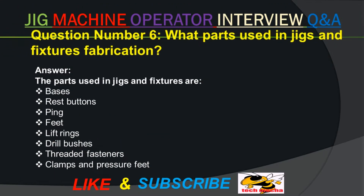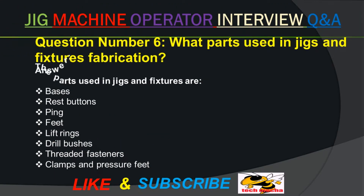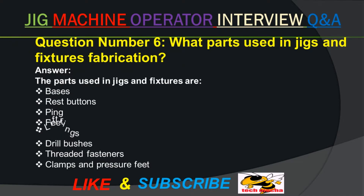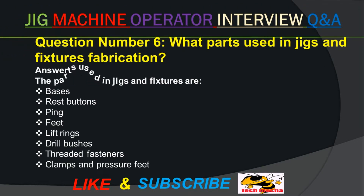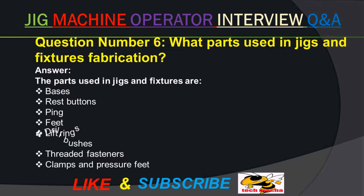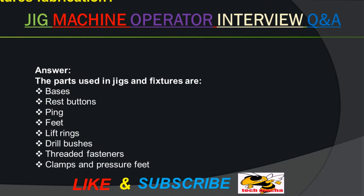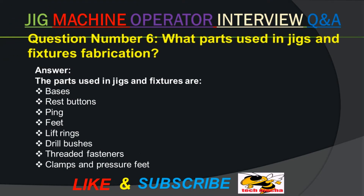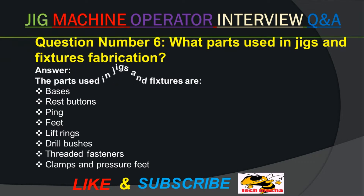Question number six. What parts are used in jigs and fixtures fabrication? Answer. The parts used in jigs and fixtures are: bases, rest buttons, pins, feet, lift rings, drill bushes, threaded fasteners, and clamps and pressure feet.